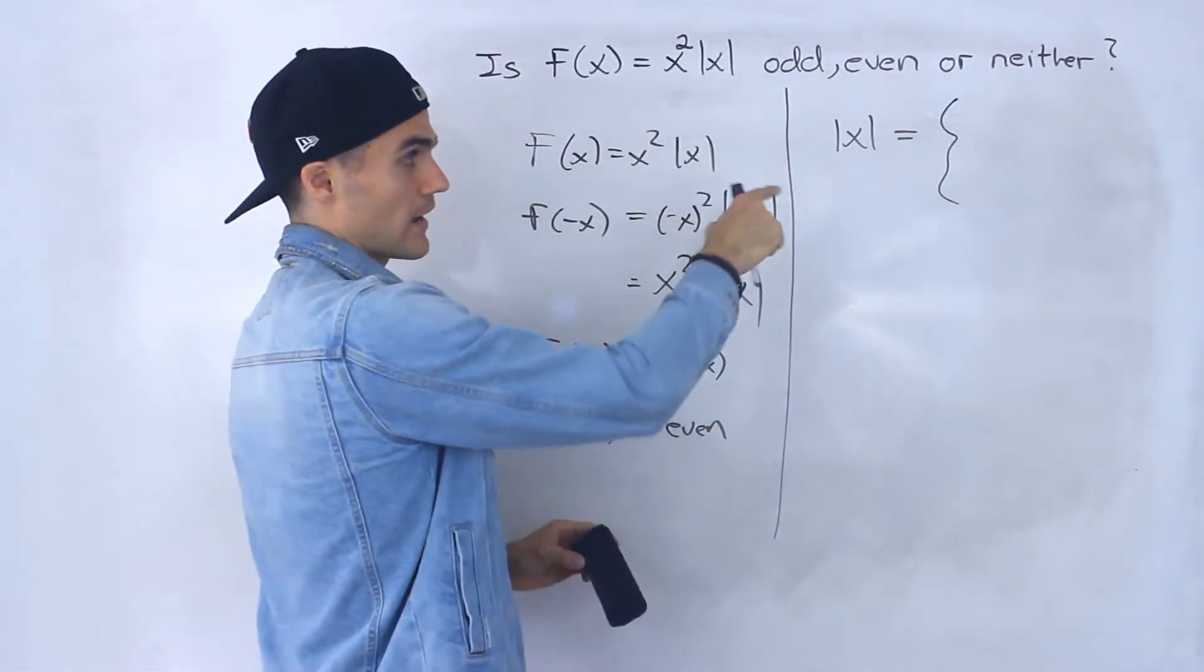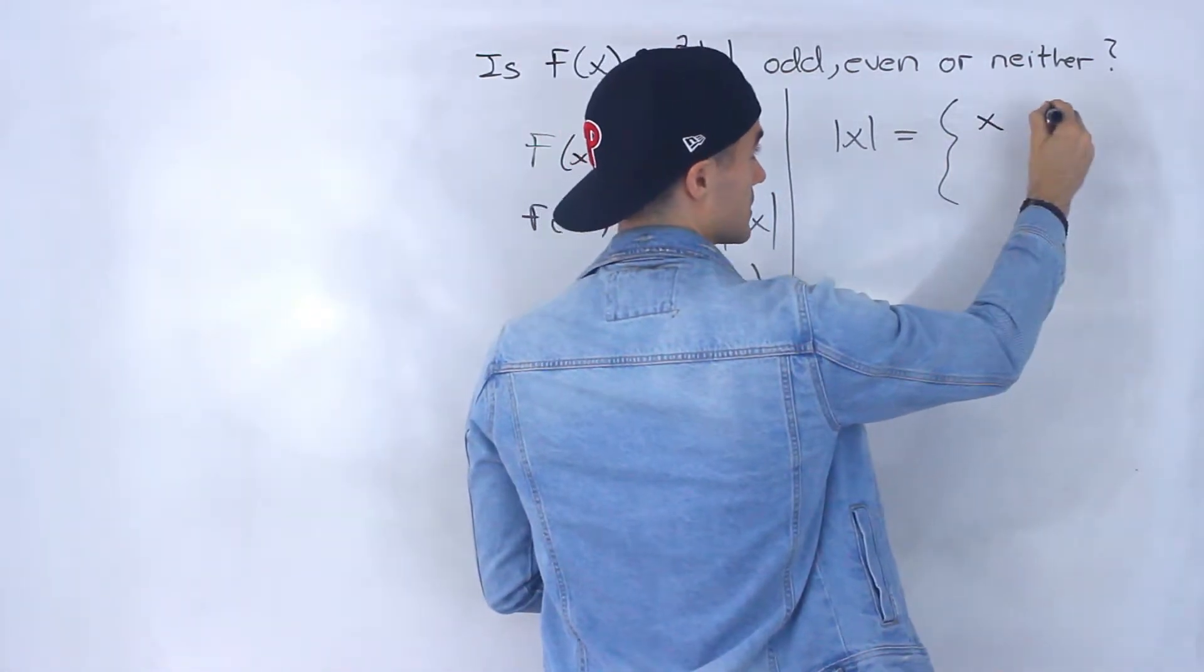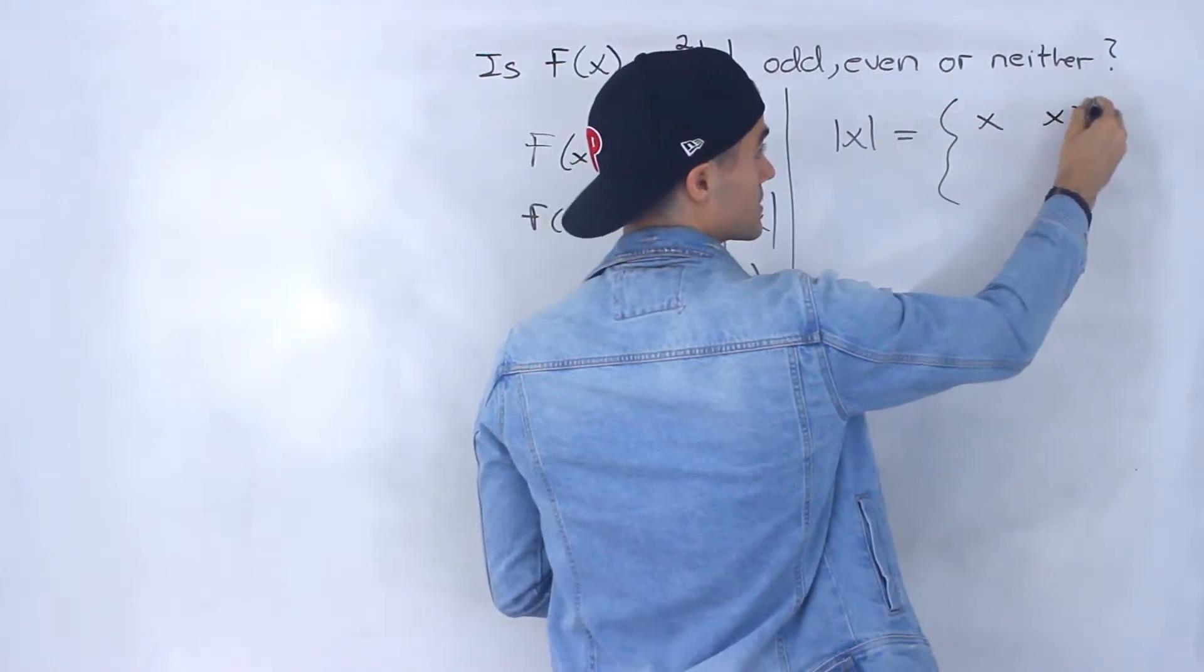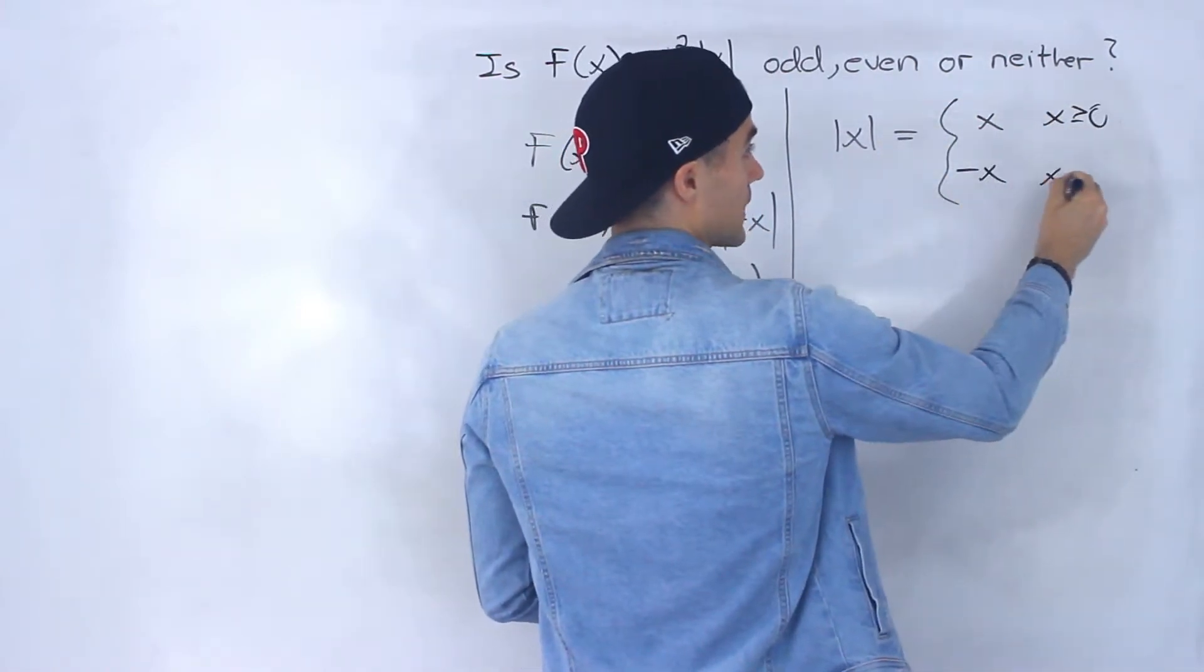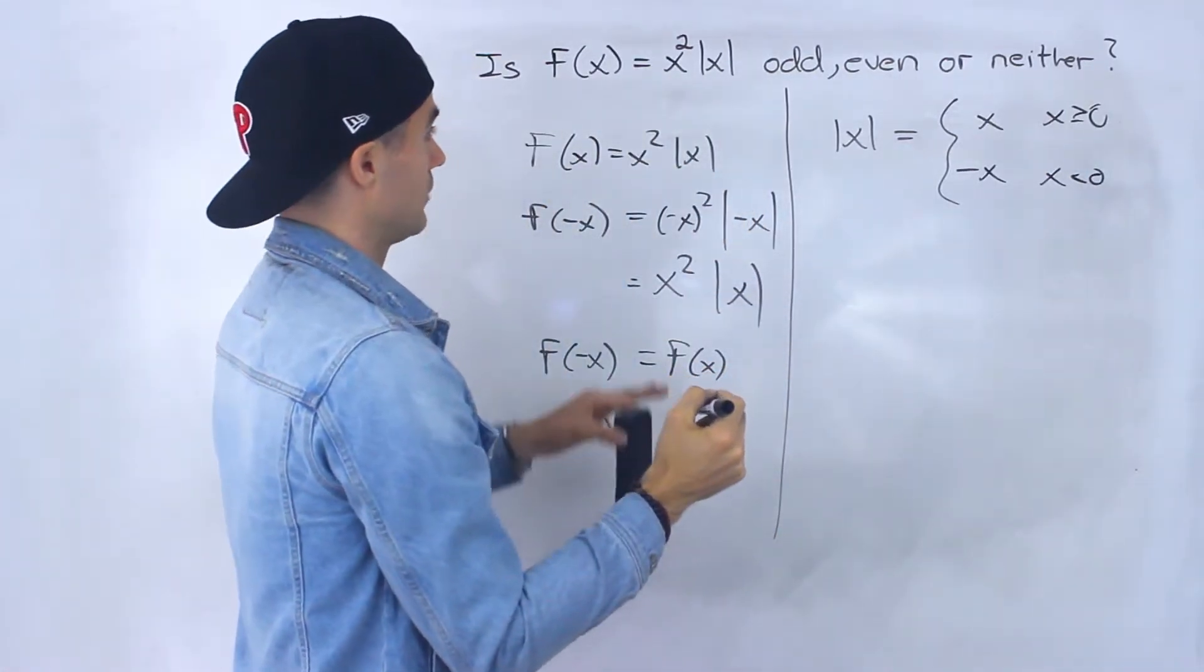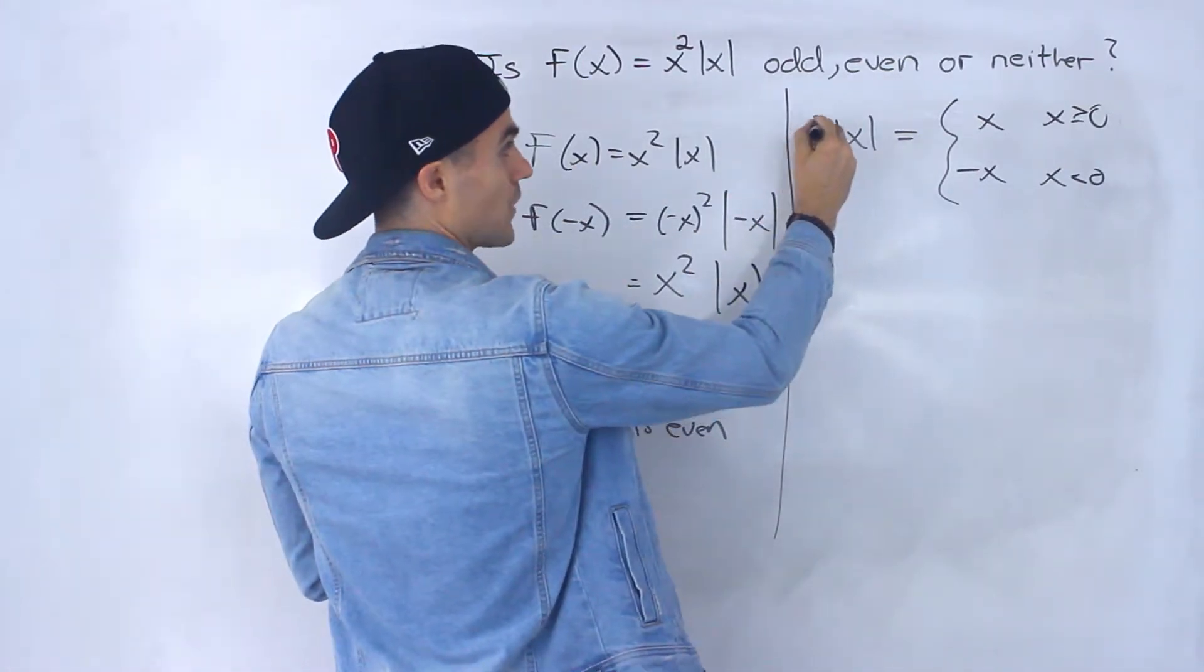So first off, absolute value x, we can change that to a piecewise function where this is going to equal x when x is greater than or equal to zero, or it's going to be negative x when x is negative. Okay, so applying that here on this function,